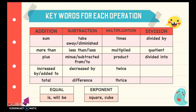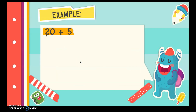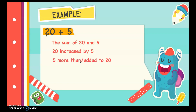So if I have here 20 plus 5, translating this mathematical expression into words, it could be the sum of 20 and 5. But it could also be 20 increased by 5. Or, 5 more than, or added to 20. So if it is more than or added to, meaning you need to switch the two numbers. Then we also have the total of 20 and 5. Or simply, 20 plus 5.